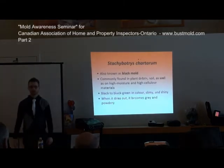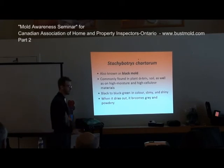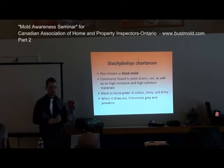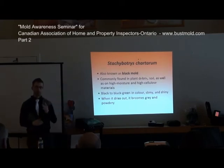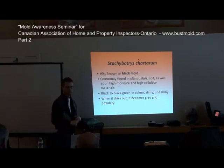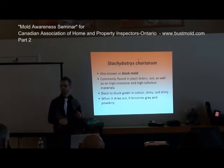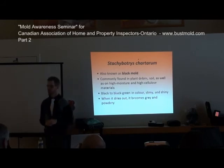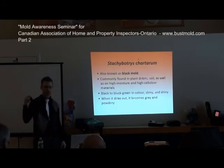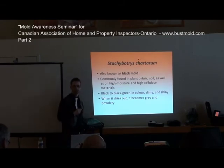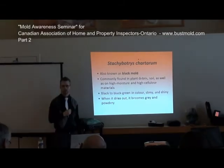Black mold is the most common one we would encounter on a daily basis. It's commonly found in plant debris, soil, as well as high moisture materials. It's black and green in color, kind of slimy and shiny — really disgusting looking stuff. When it dries out, it becomes brown and powdery, and that stuff flows through the air like crazy.